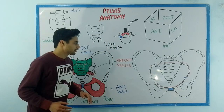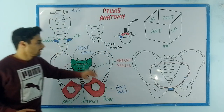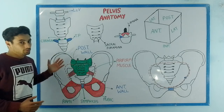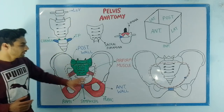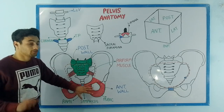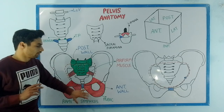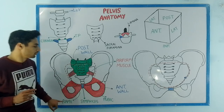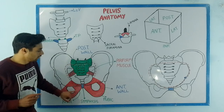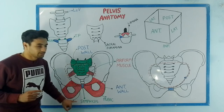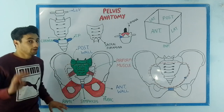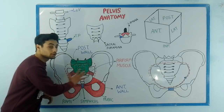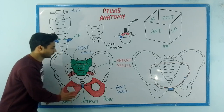Now let us discuss the anterior wall and the posterior wall. Have a look at this beautiful diagram. The anterior wall consists of three things: the pubic bone and the ischiopubic rami of both sides, and the symphysis pubis. These three things will form the anterior wall of this pelvic cavity.